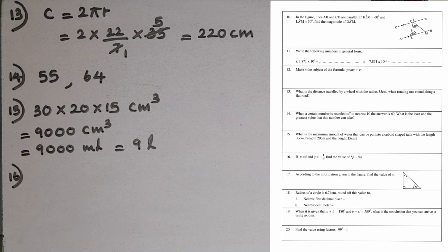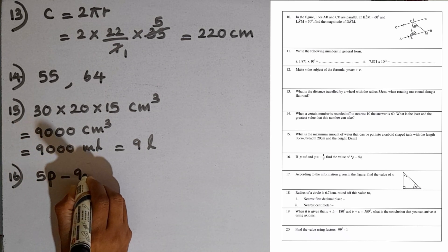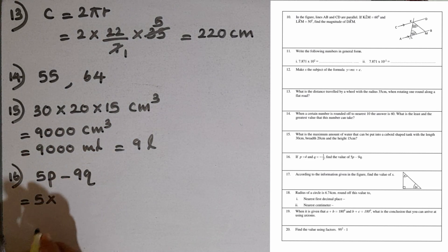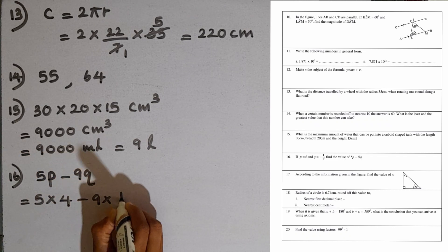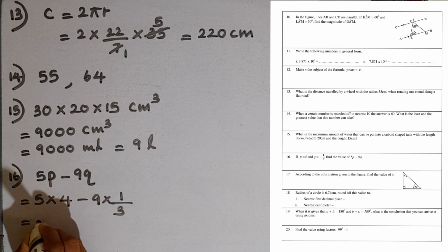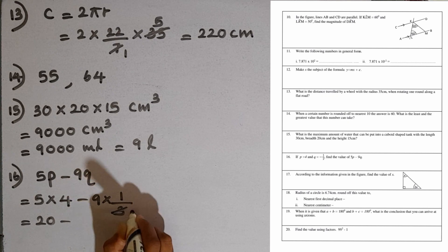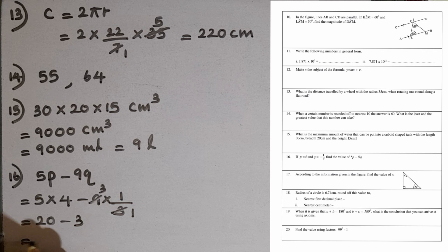Question number 16: if P equals 4 and Q equals minus 1 over 3, find the value of 5P minus 9Q. Substituting: 5 multiplied by 4 is 20, and 9 multiplied by 1 over 3 is 3. So 20 minus 3 gives the answer 17.